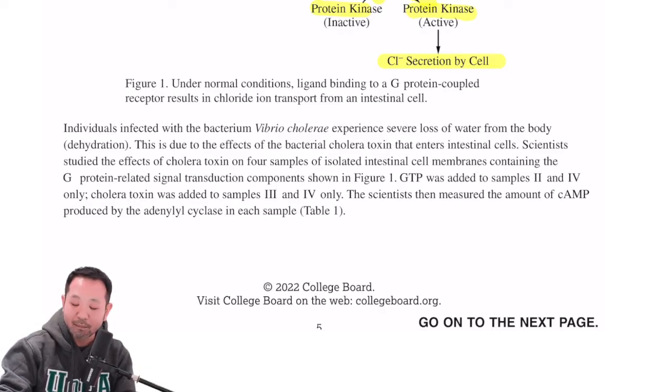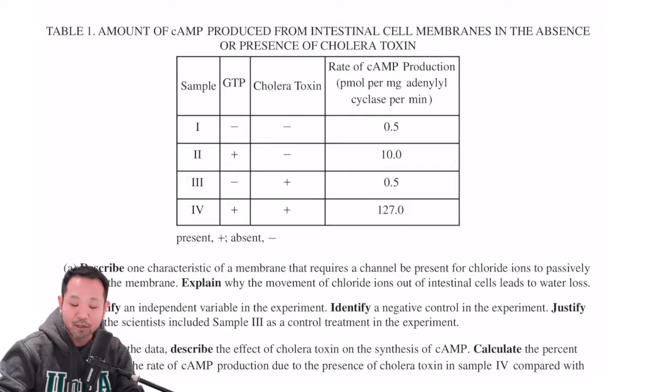GTP was added to samples two and four only. Cholera toxin was added to samples three and four only. And we'll see a table for this. So if this isn't making too much sense by reading, you'll see it very shortly. And it says the scientists then measure the amount of cyclic AMP produced by adenyl cyclase in each sample. And as I mentioned,